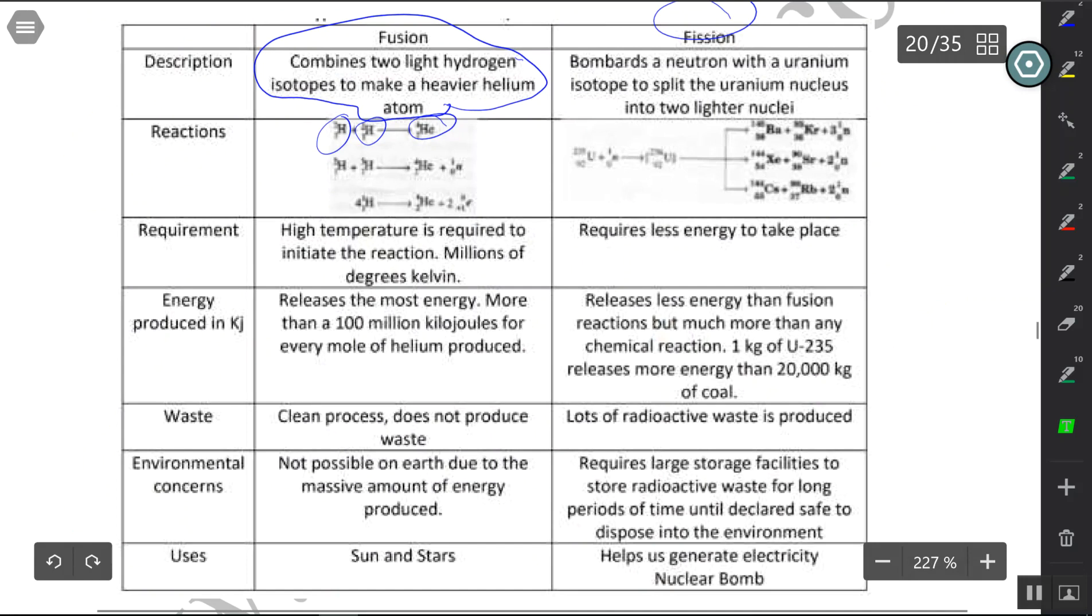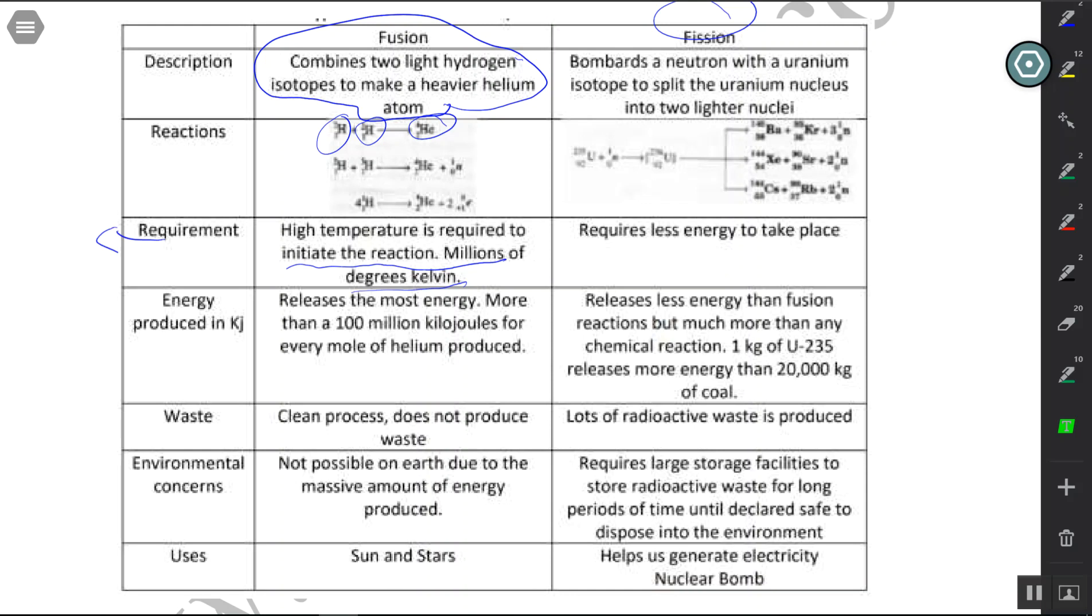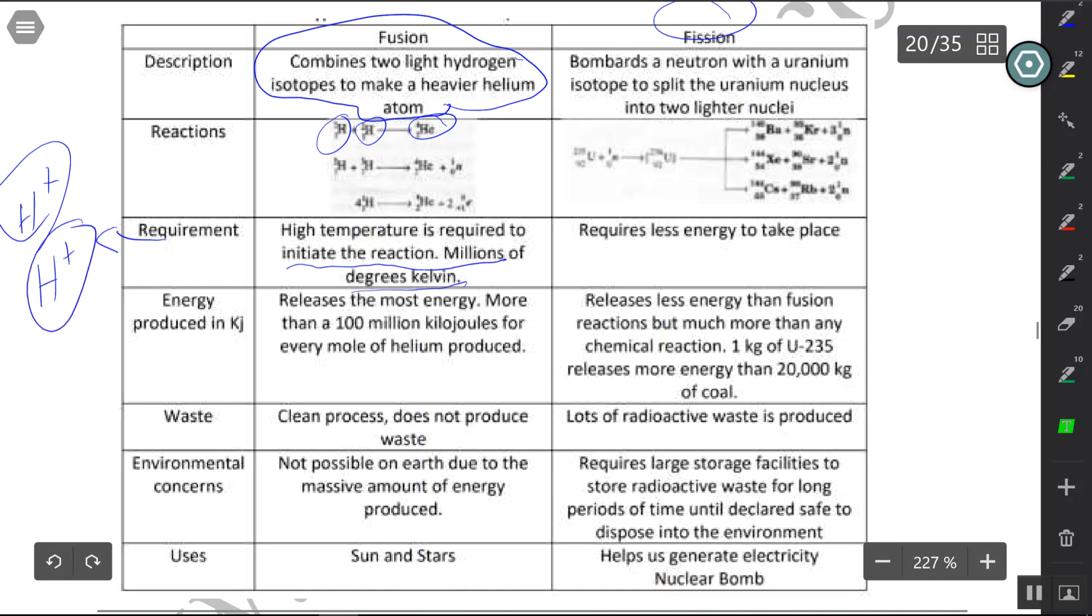You need a whole lot of energy to initiate the fusion reaction. Why? Because fusion is actually trying to combine two positive hydrogen atoms. And we know that like charges repel. So this positive is going to go that way and this positive is going to go that way. You have to force them to combine together to create helium. So a lot of energy is needed. For fission, it doesn't require as much energy to take place.